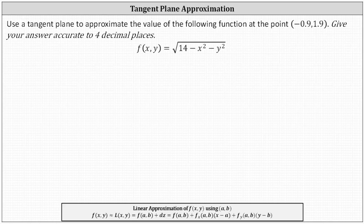Use a tangent line to approximate the value of the following function at the point (-0.9, 1.9), where our function is f(x, y) equals the square root of the quantity 14 minus x squared minus y squared. A tangent line approximation can also be referred to as a linear approximation for a function f(x, y).